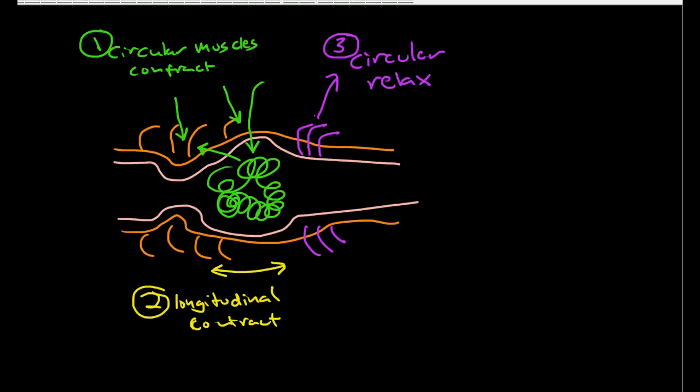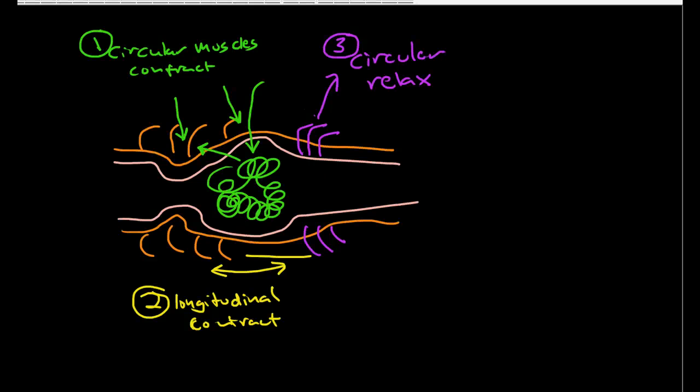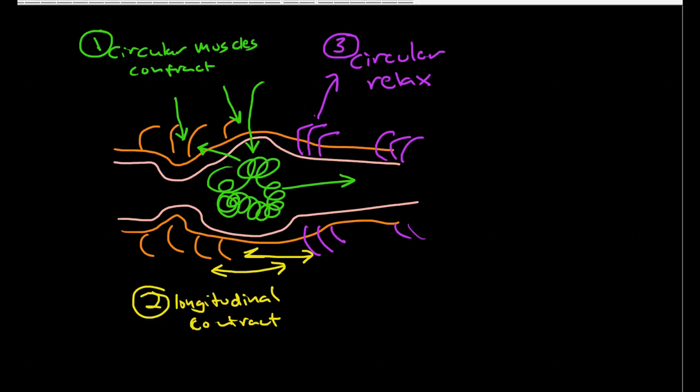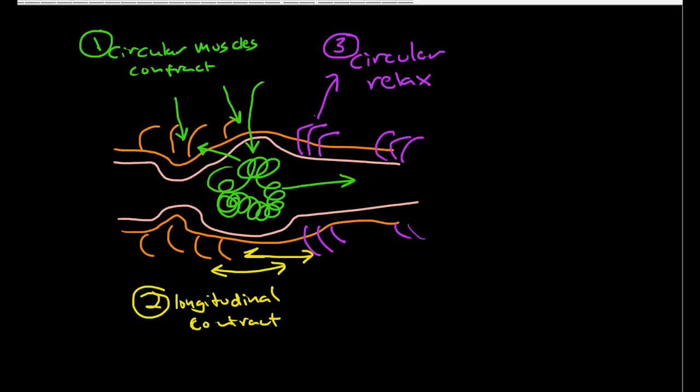These circular muscles contracting and these longitudinal muscles contracting and circular muscles way up here relaxing, then this pushes, the circular muscles push, the longitudinal muscles shorten that part of the tube, so you're pushing the bolus and you're shortening up the tube at the same time. These muscles relaxing allow this bolus to move in this direction. This gets repeated over and over again and we slowly move it inch by inch.